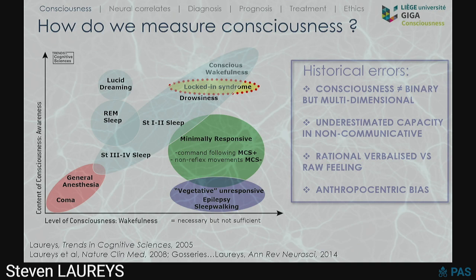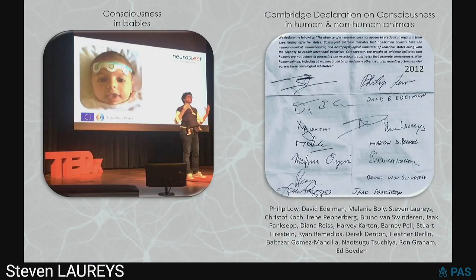That is true also for other conditions such as babies — this is me giving a TEDx with little Louis, my youngest of five kids, who has been a volunteer in many experiments. We now have neurotechnologies that can help us reduce the uncertainty whether babies are having consciousness. When I was at university, we were still taught that they can't feel pain. Of course, now we know better.